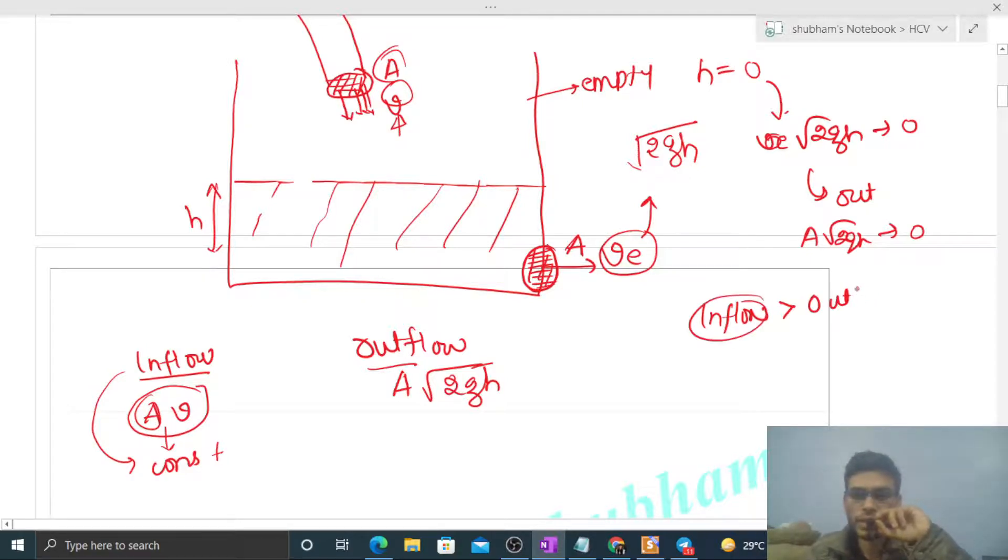So if inflow is greater than outflow, it means the water level in this tank will increase. It means h will increase because more water enters the tank and less water exits, so the height of water level in this tank will increase.